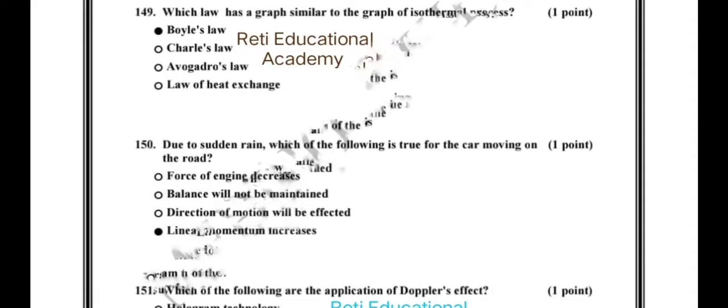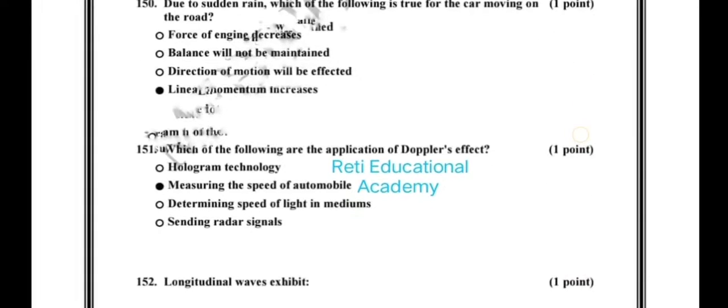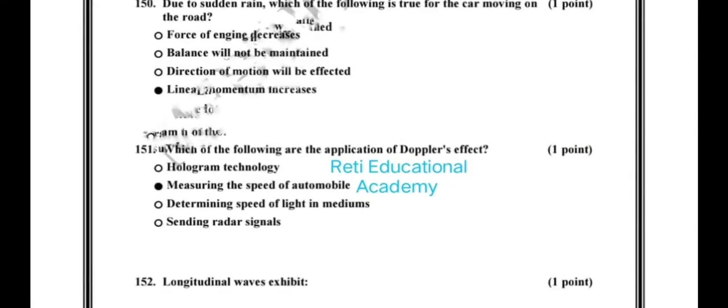Question number 149: which law has a graph similar to the graph of an isothermal process? The correct option is Weil's law. Question number 150: due to sudden rain, which of the following is true for the car moving on the road? The correct option is linear momentum increases.